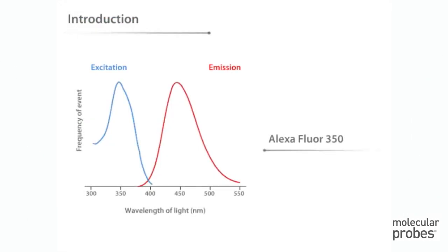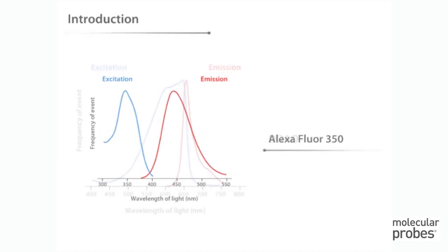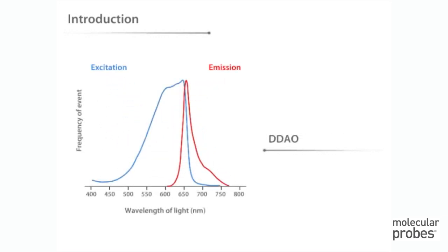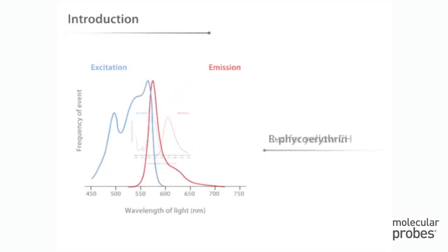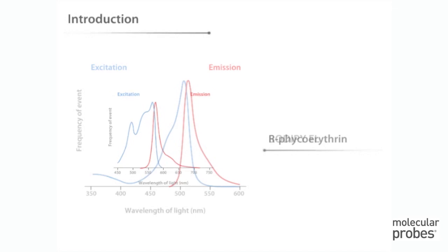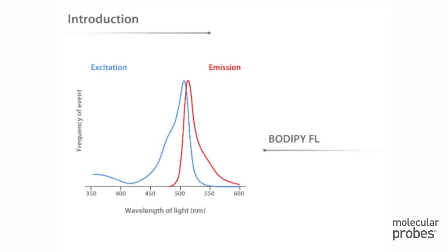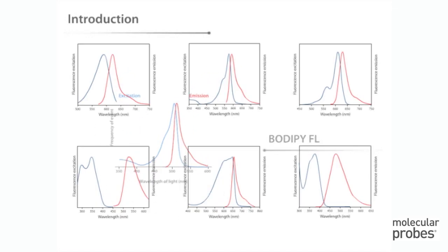The basic fluorescence properties of a fluorophore, excitation and emission, are often presented in the form of line graphs. These curves describe the likelihood that excitation and emission will occur as a function of wavelength and provide important information about the expected behavior of the irradiated fluorophore.